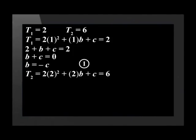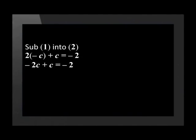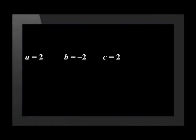We do the same thing for term 2 and get 8 plus 2b plus c equals 6. Simplifying, we get 2b plus c equals negative 2. We call this equation 2. Now substitute equation 1 into equation 2: in place of b, you have negative c. Simplifying, we get negative 2c plus c equals negative 2, so negative c equals negative 2. Dividing both sides by negative 1, we get c equals 2. Substituting back into equation 1, we get b equals negative 2. We have worked out that a equals 2, b equals negative 2 and c equals 2.